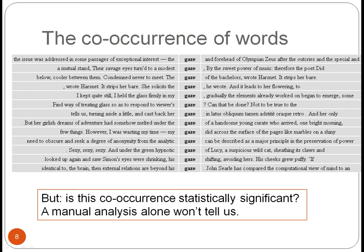Instead of analyzing concordances, we could use automatic collocation analysis tools, which apply statistical measures to word occurrences in a corpus. In sum, the statistical approach has taken off and seems to be the one most widely used these days.